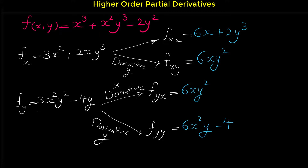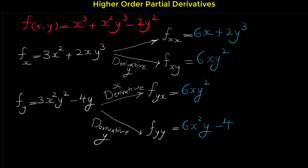You may notice that f sub xy — the partial derivative of f with respect to x then with respect to y — equals f sub yx — the partial derivative of f with respect to y then with respect to x. So f sub xy equals f sub yx. This is not just a coincidence. We can prove that for most functions these two mixed partial derivatives are almost always the same.